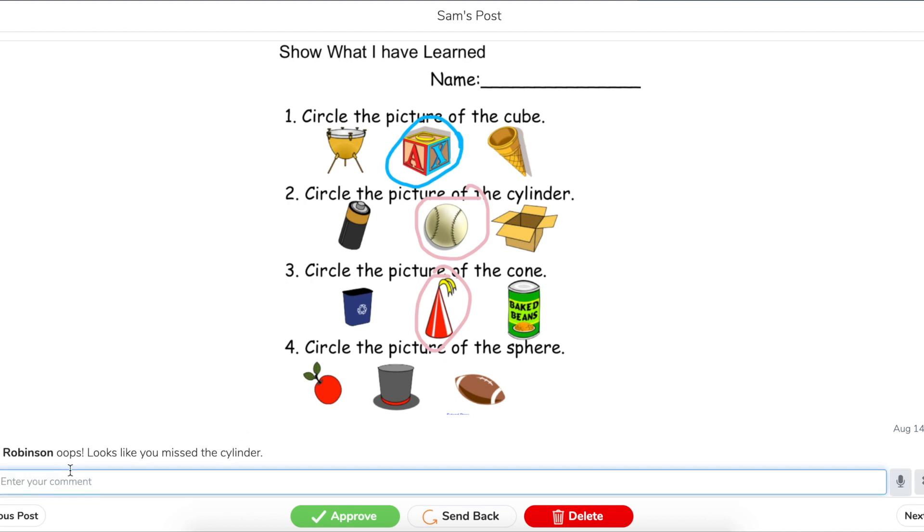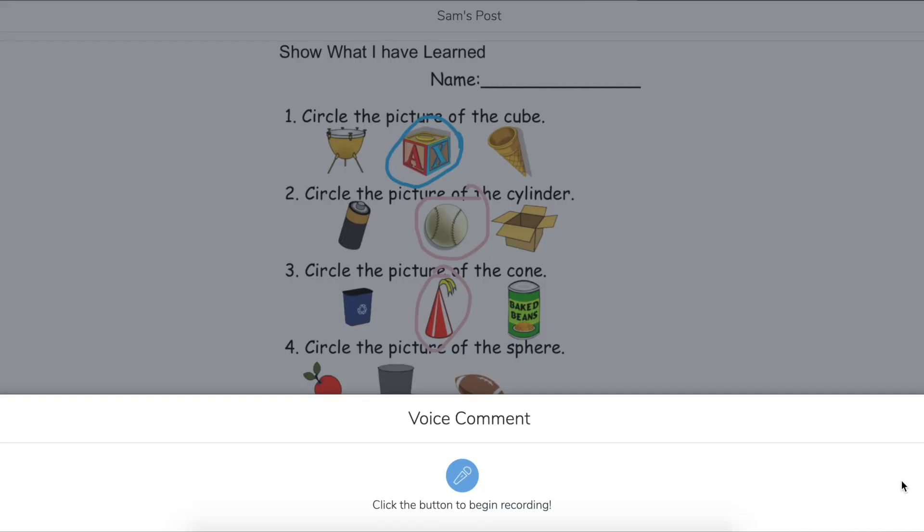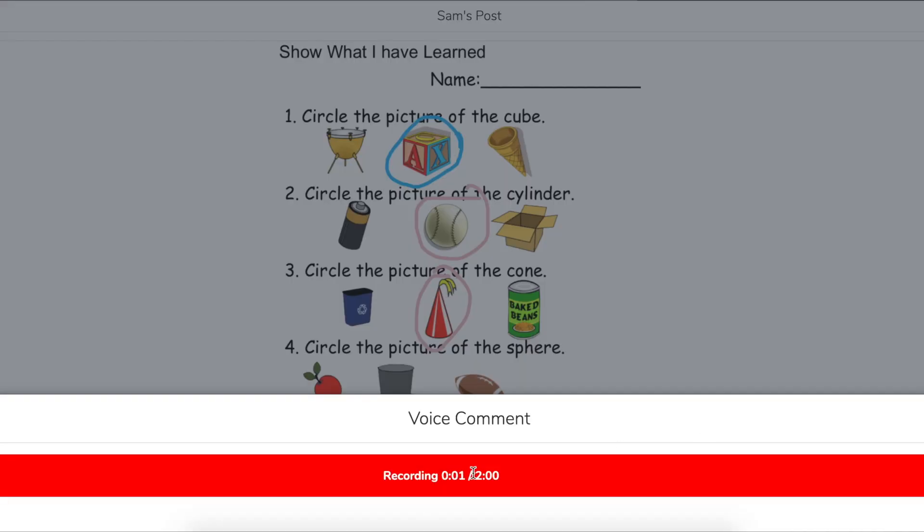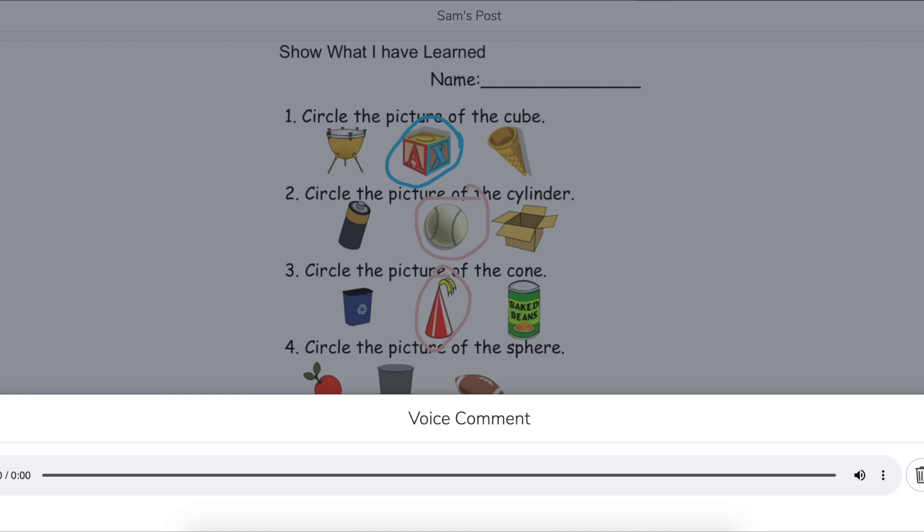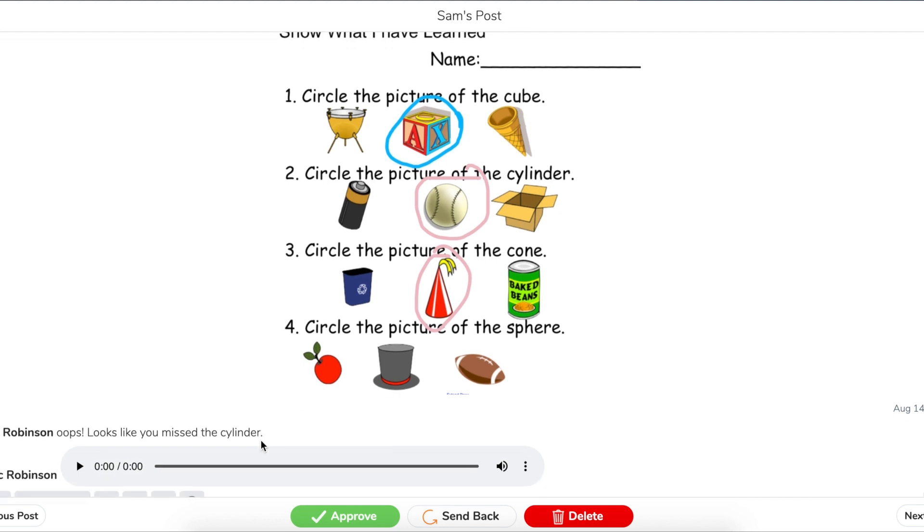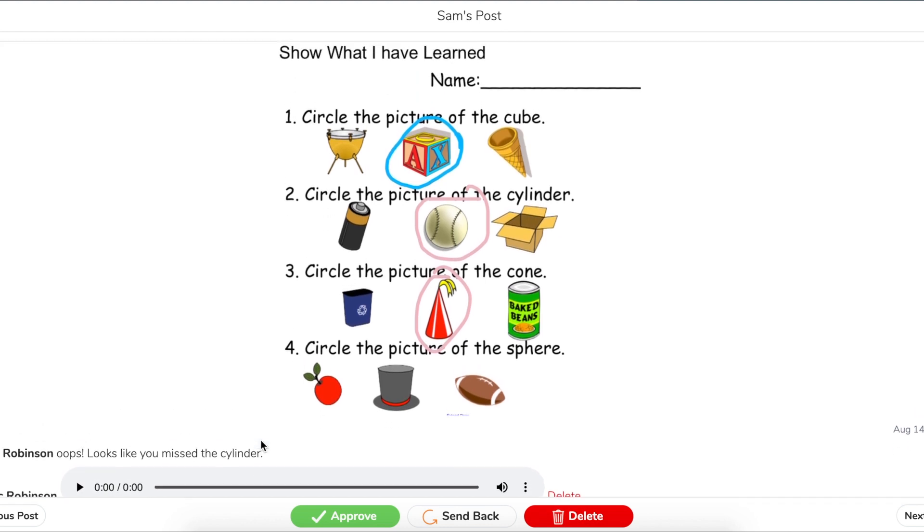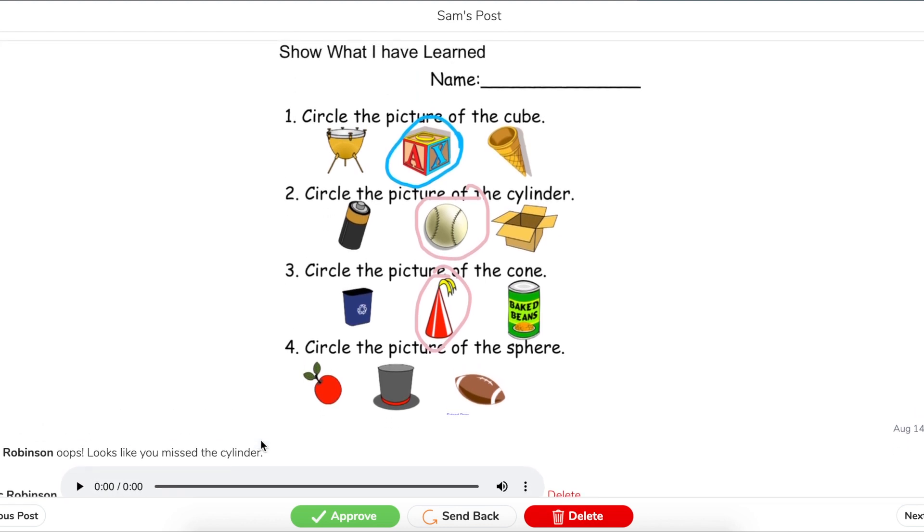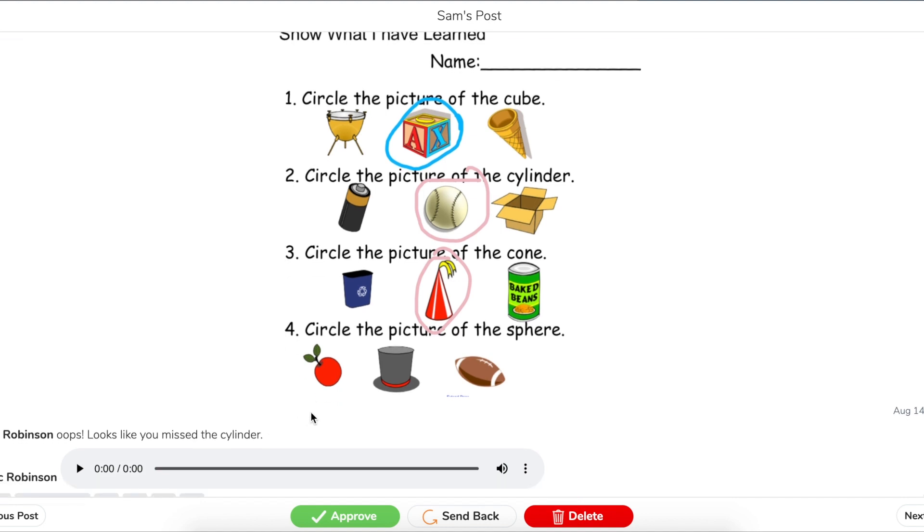Now of course you could do a voice comment right over here with the microphone. I could say Sam, this is great. It looks like though at number two you circled a picture of a sphere, actually the cylinder is the battery. Okay, so that's a little bit better because now my student can hear in my voice that even though I'm being critical, my voice isn't sounding mean or upset with them, which sometimes when you type things out it can sound that way unintentionally.